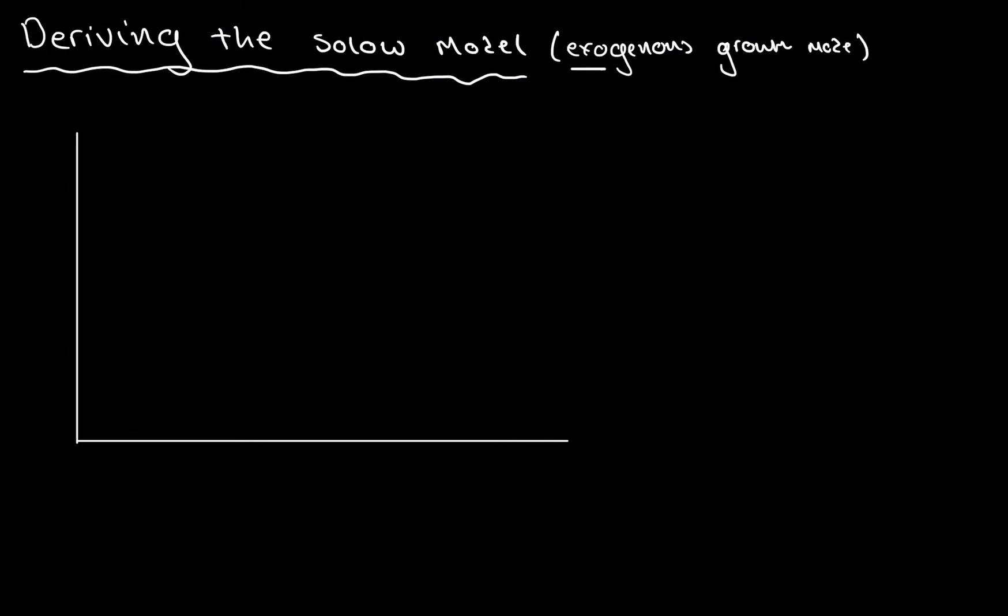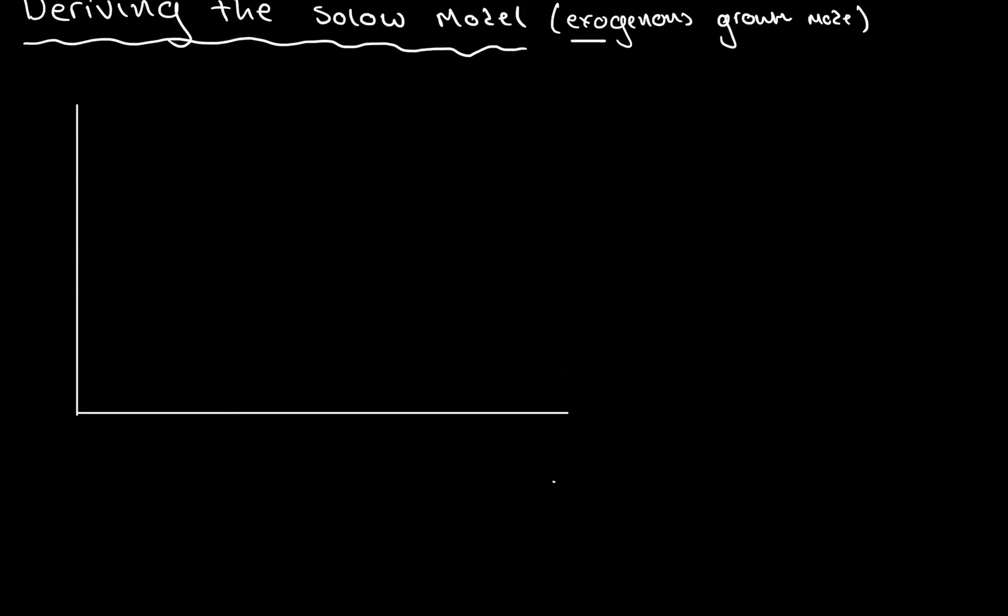Let's first of all label the axes. What we have on the y-axis is the output per labor, and that can be written like this, output per labor. And then, on the x-axis, we can call this either capital accumulation or, depending on your textbook, capital per labor.